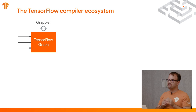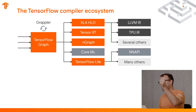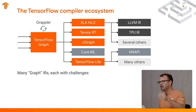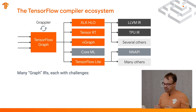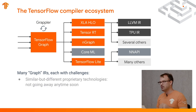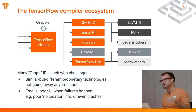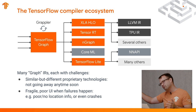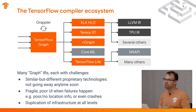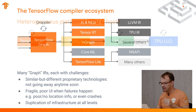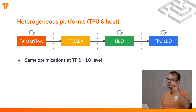If we look at the TensorFlow compile ecosystem, the real situation is that from a TensorFlow graph, we have multiple different backends and multiple different IRs being generated: we generate HLOs, TensorFlow RT has an output, there's N-Graph, Core ML, TensorFlow Lite — many different graph IRs, each with different challenges. In a lot of these bridges, we have similar but different technologies. This results in a fragile, poor user experience when failures happen — location tracking between these different phases is variable, and if an error occurs, you can't trace it back. This also leads to duplication of infrastructure at all levels. We have the same optimizations at both the TensorFlow and HLO level.